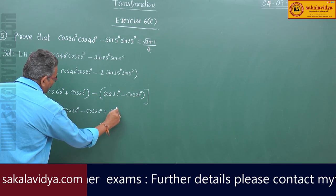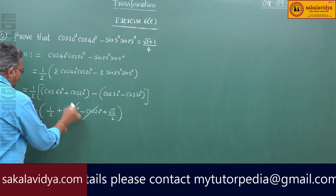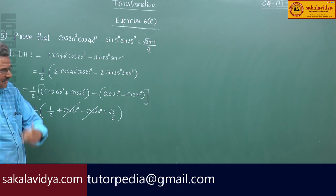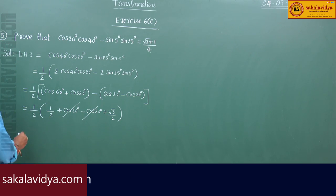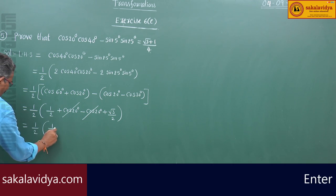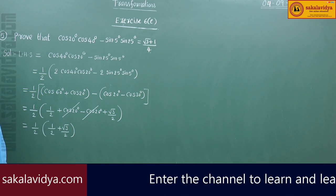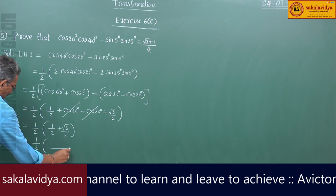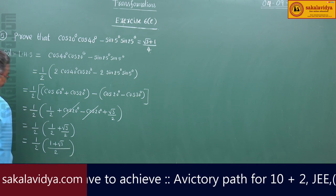Because cos30 = √3/2, the cos20 terms cancel each other. The remaining terms in the bracket are 1/2 (from cos60) plus √3/2 (from cos30). Taking LCM of 2, this gives (1 + √3)/2.